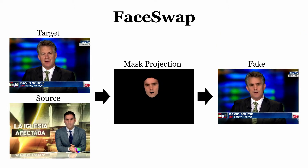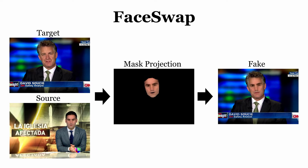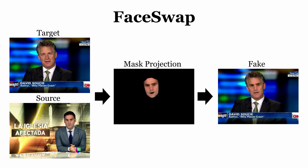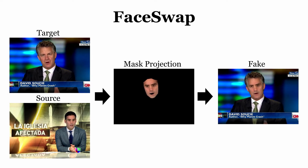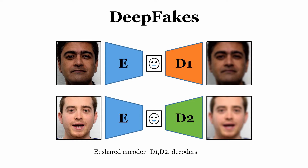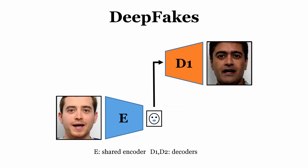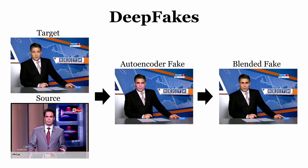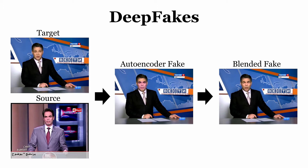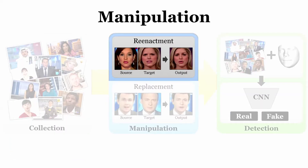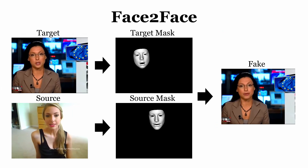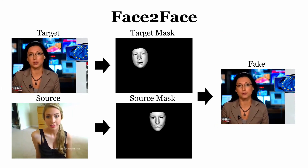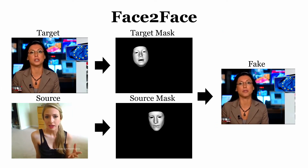FaceSwap is a lightweight approach that extracts the face region of one image, places it into another, and can be run on smartphones. We also consider DeepFakes, which is a learning-based face swap approach based on two auto-encoders with a shared encoder. It uses Poisson image editing to merge the manipulated face with the image. The facial reenactment category is covered by FaceToFace, which transfers the expressions from a source actor to a target actor while preserving the target actor's identity.